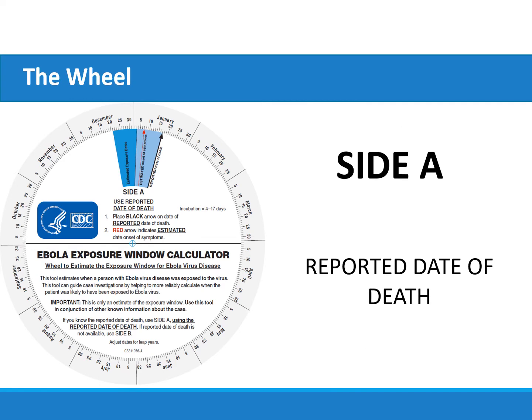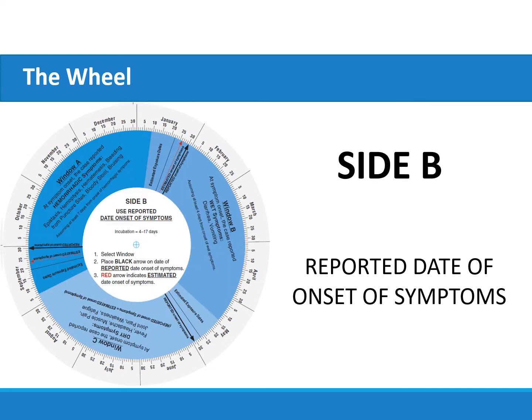Side A uses the reported date of death to estimate the exposure window for a person with confirmed EVD. If the reported date of death is known, this is the preferred way to estimate the exposure window. If the reported date of death is not known, Side B uses the reported date of onset of symptoms to estimate the exposure window for a person with confirmed EVD.